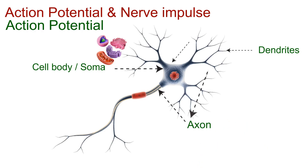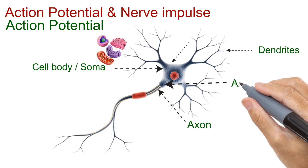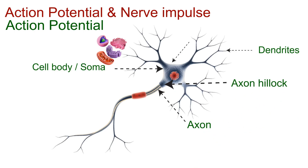Right where the soma meets the axon is a small but crucial region called the axon hillock. Remember this point, because it plays a central role in generating action potentials.